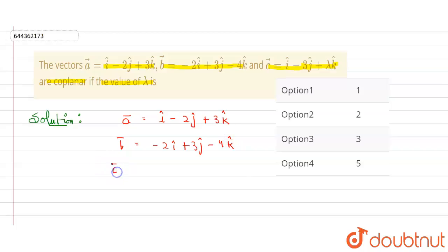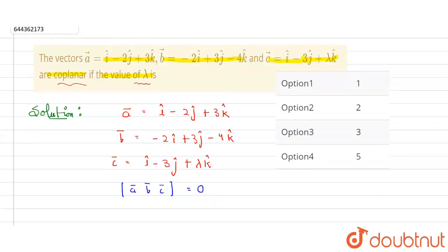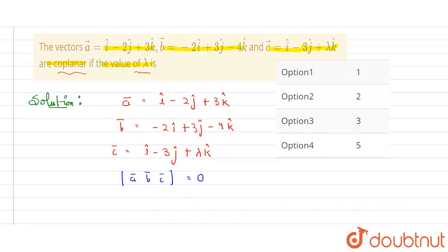And vector c is i cap minus 3j cap plus lambda k cap. It is given in the question that these three vectors are coplanar, then we have to find the value of lambda and four options are given. How can we say three vectors are coplanar? If three vectors are coplanar, then the value of the determinant [a, b, c] equals zero. This is a property of vectors.